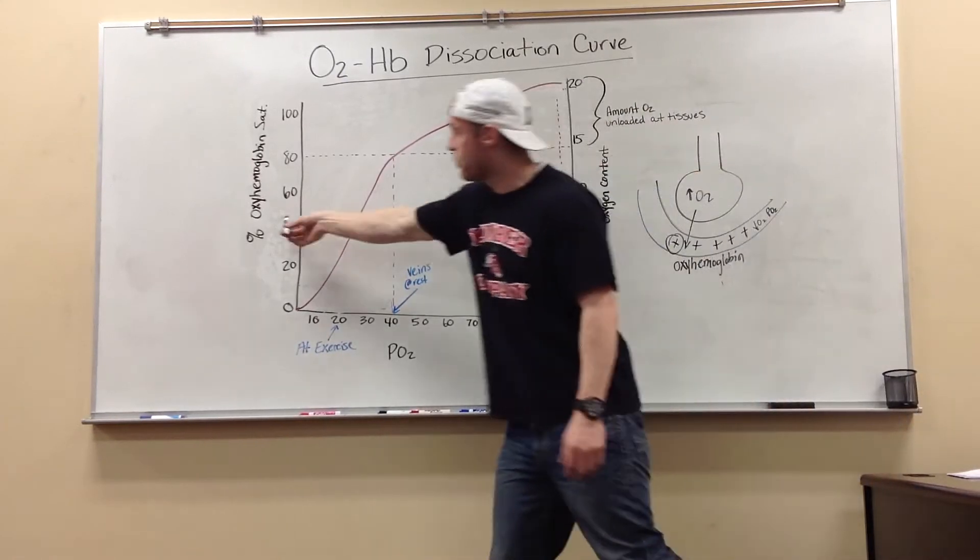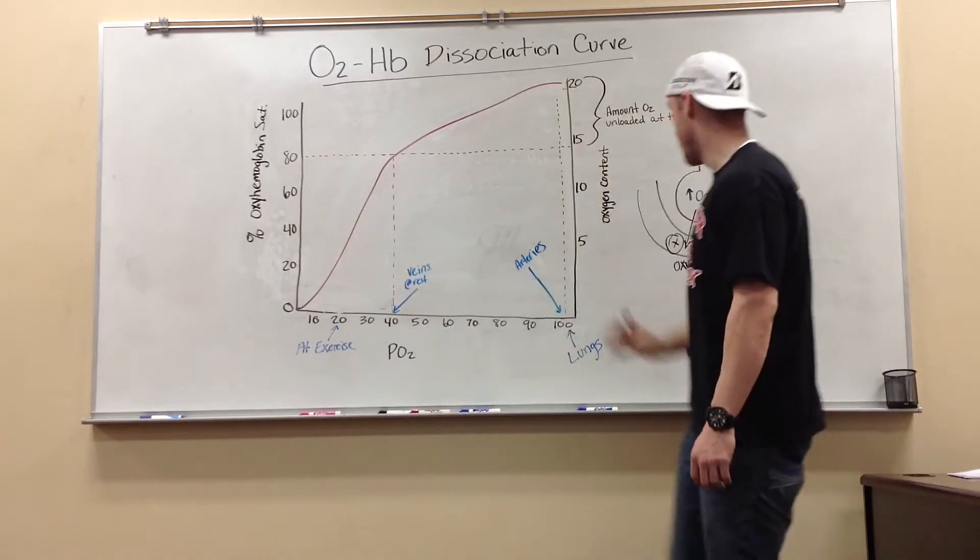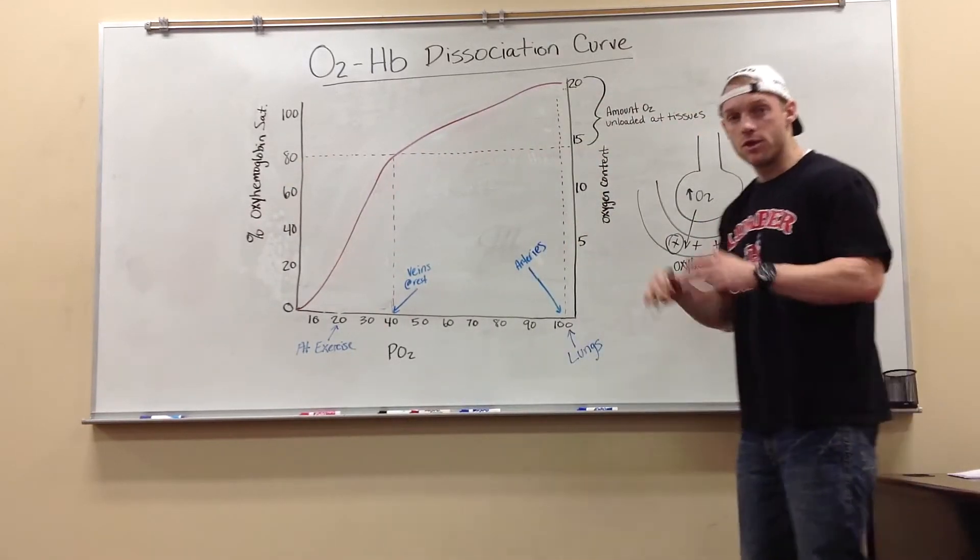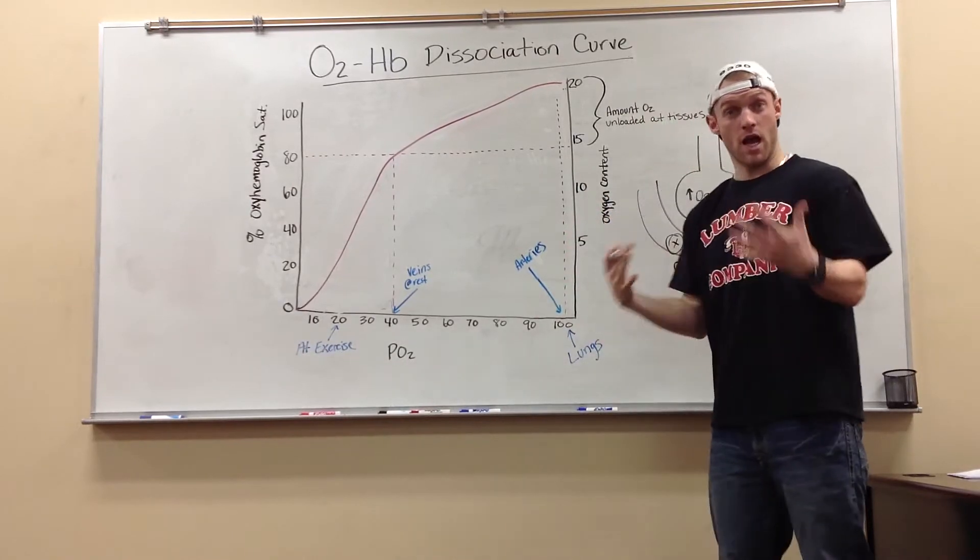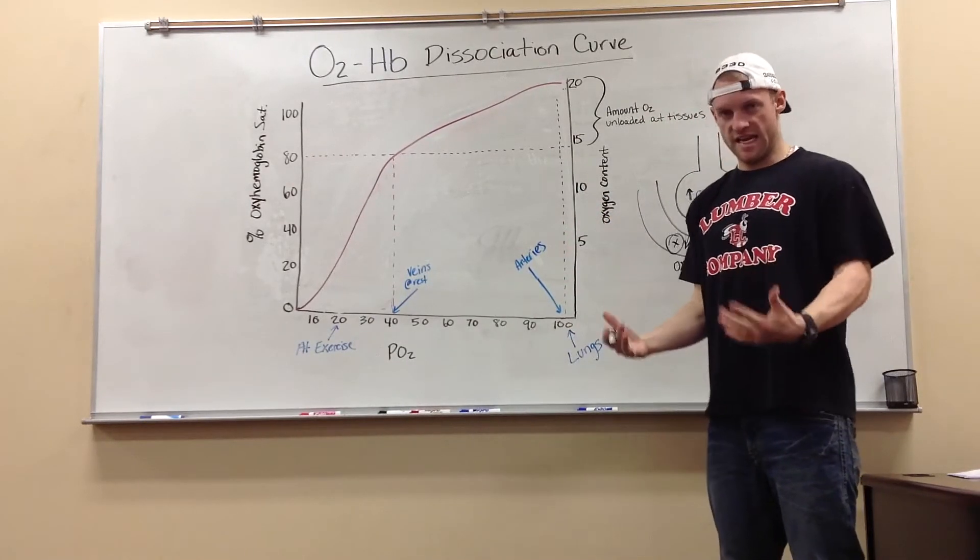And as you can see, that's what this percentage on the left-hand side of this chart is. So at the lungs, we have a high affinity for oxygen. We have a lot of oxygen in our lungs and it needs to leave.